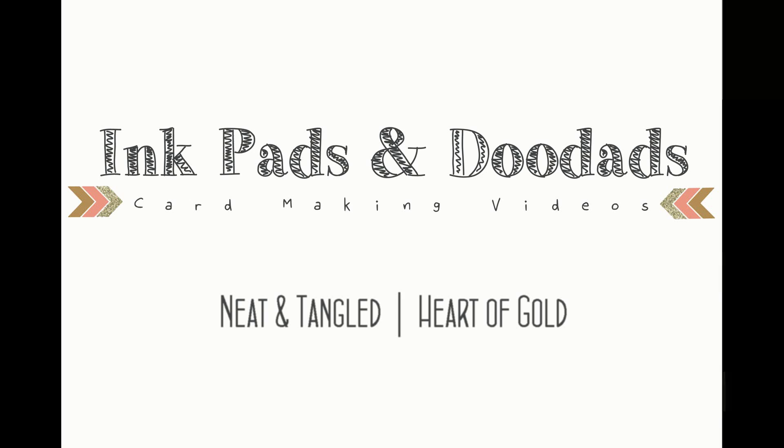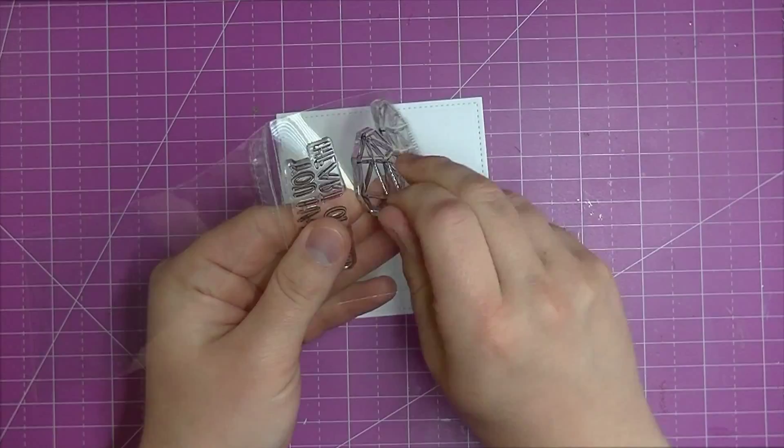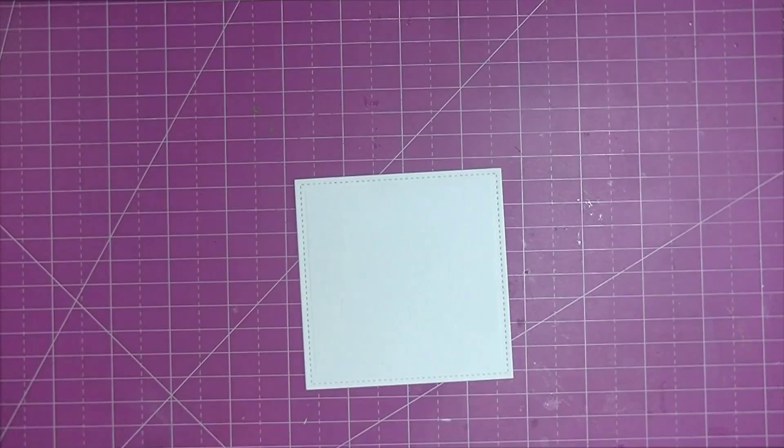Hi everyone! Today I have a card with a very simple design using the emboss resist technique. To start, I die cut a Lawn Fawn stitch squared die from some Tim Holtz watercolor paper.